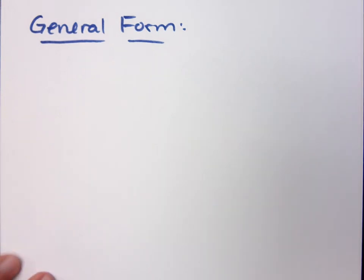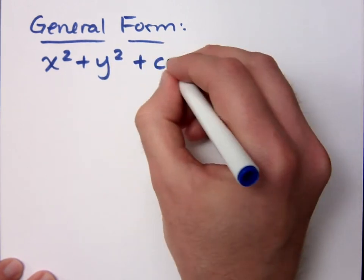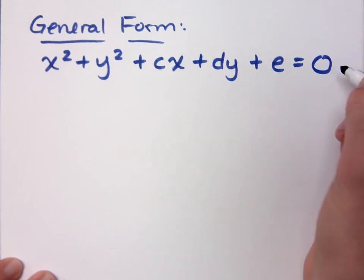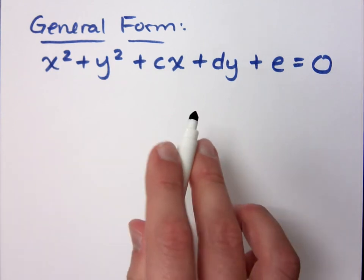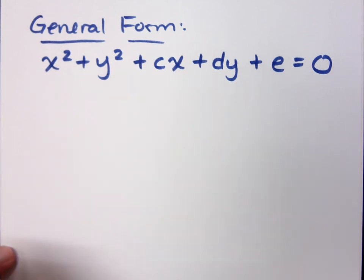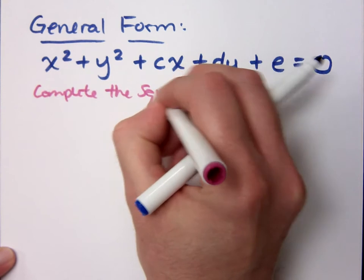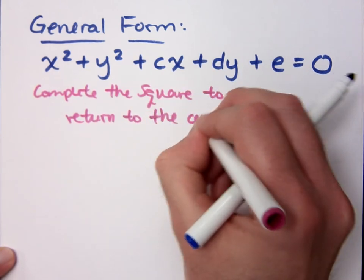Let's look at the general form for a circle. This general form can be very messy if you're not careful: x squared plus y squared plus cx plus dy plus e equals 0. That's the general form. I'm just writing it there so you can see it and so you can freak out. Here's what we want to do, though — I want to give you equations in this form, and you'll go from this form into the center-radius form. Complete the square to return to the center-radius form.